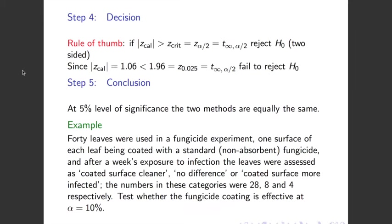Matched pairs example 2. Forty leaves were used in a fungicide experiment; one surface of each leaf was coated with a standard non-absorbent fungicide. After a week's exposure to infection, the leaves were assessed as: coated surface cleaner, no difference, or coated surface more infected. The numbers in these categories were 28, 8, and 4 respectively. Test whether the fungicide is effective at the 10% significance level. We can already see n-plus and n-negative from these values. We want to test whether the fungicide is effective, so p is greater than one half — a one-sided test.